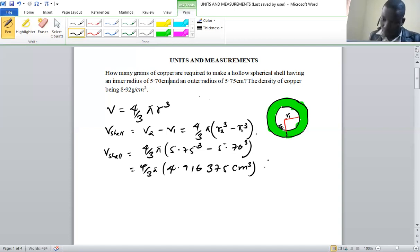And this part gives us 4.916375 cubic centimeters. And then we multiply by the four thirds, and then we also multiply by pi. And we get the volume of the shell to be 20.59 cubic centimeters. So this is the volume that we have found.